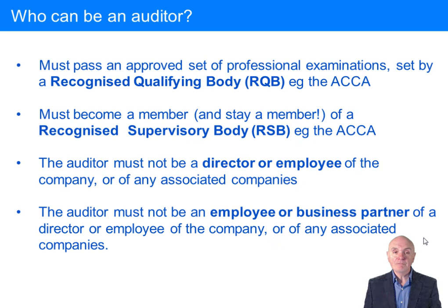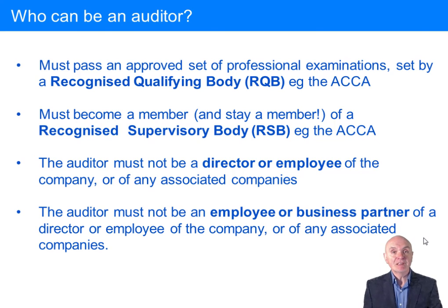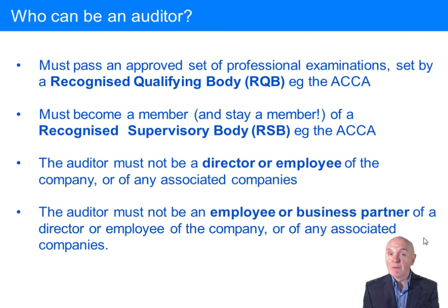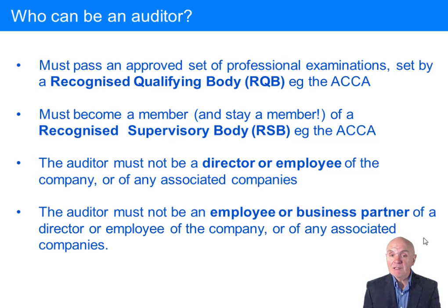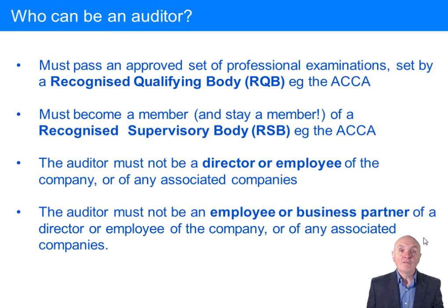Who can be an auditor? In the UK, you have to be a member of a recognized qualifying body — that's the ACCA — which looks after your qualifications. And to make sure you stay righteous, you also have to be a member of a recognized supervisory body, which the ACCA has also won. Auditors may not be directors or employees of the company — they have to be independent. They are also not allowed to be an employee or business partner of a director or employee of the client.